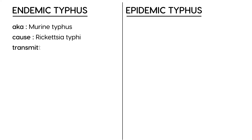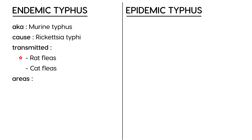Endemic typhus is transmitted by rat fleas — this is very important on clinical vignettes. Sometimes it can also be transmitted by cat fleas, but the rat flea is the key clue that will help you distinguish the correct answer. In terms of geographic areas, it can occur in many parts of the world, but on clinical vignettes in North America, you will often see the southern western part of the United States.